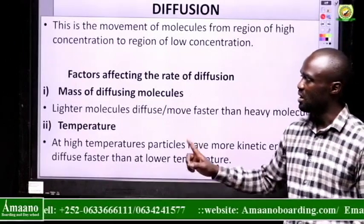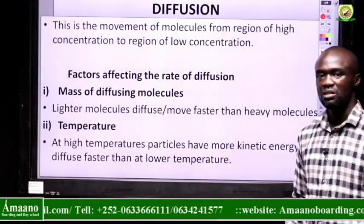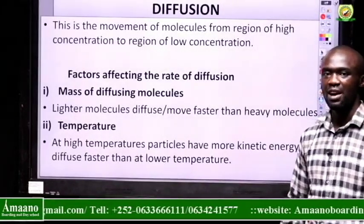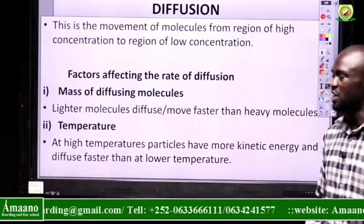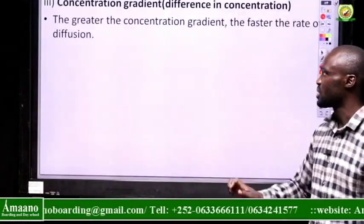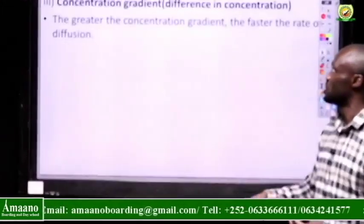The second factor is temperature. At high temperature, molecules have high kinetic energy and they move faster than at low temperature. The third factor is the concentration gradient, or the difference in concentration between the two regions. The bigger or greater the concentration gradient, the higher the rate of diffusion.